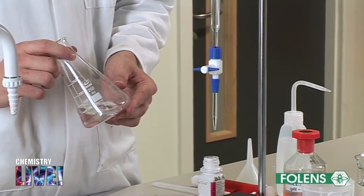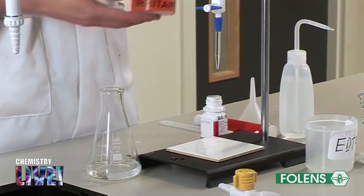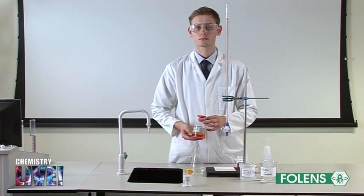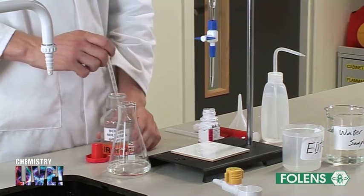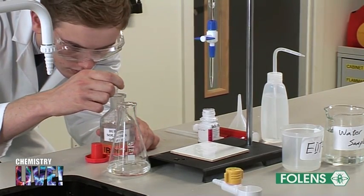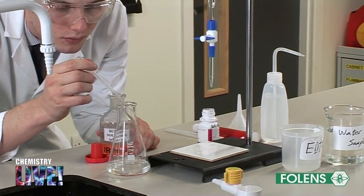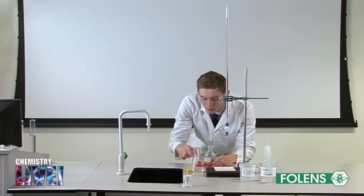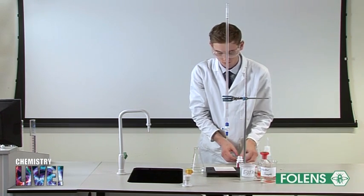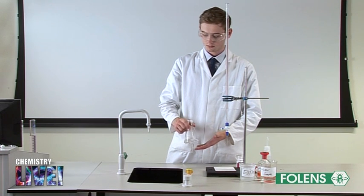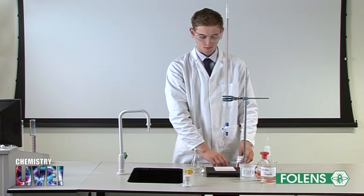Add 1 cm³ of the buffer solution to the conical flask. Add a small amount of the solid eriochrome black T indicator to the conical flask also.